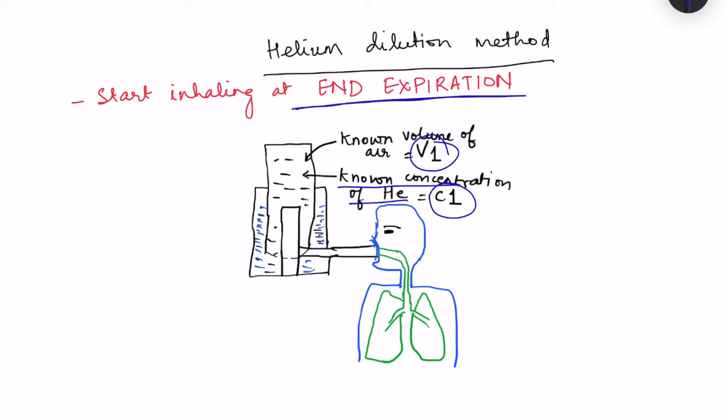The person starts inhaling at end expiration and is asked to continuously inhale and exhale into the spirometer. This helium will go into the lungs and some will come out. As this process continues for a few breaths, helium molecules become equilibrated between the spirometer and the lungs. Once equilibrium is achieved, we determine the final concentration of helium in the spirometer — that is C2 — and the volume now includes both the spirometer volume and the lung volume.